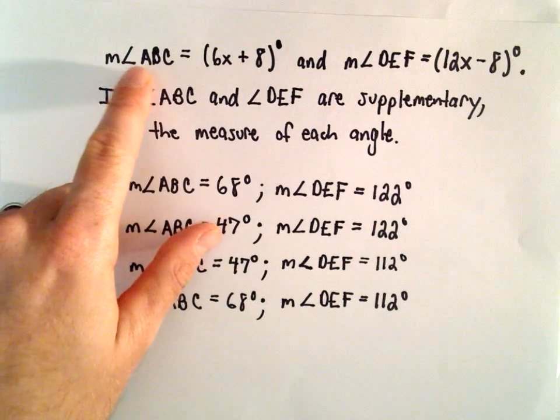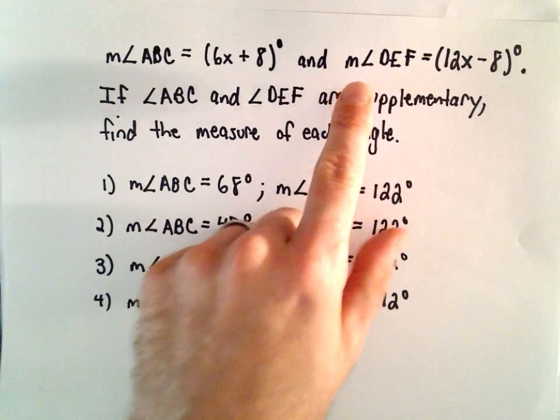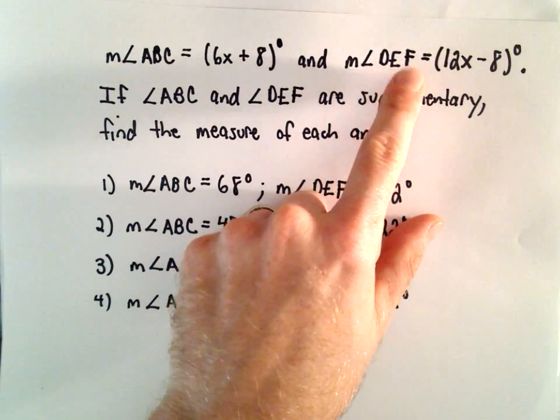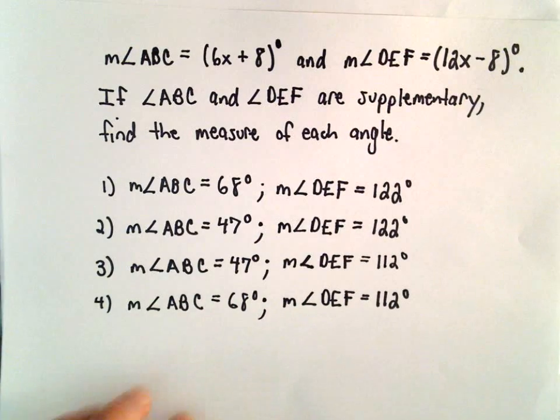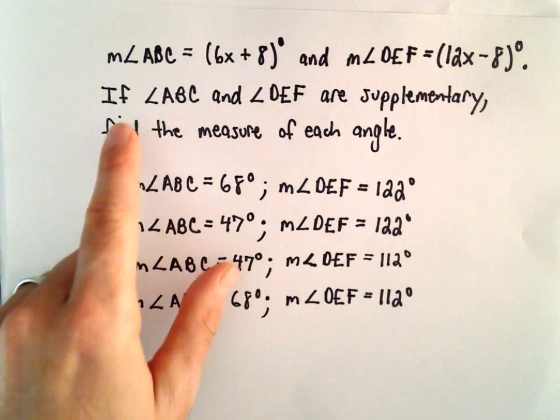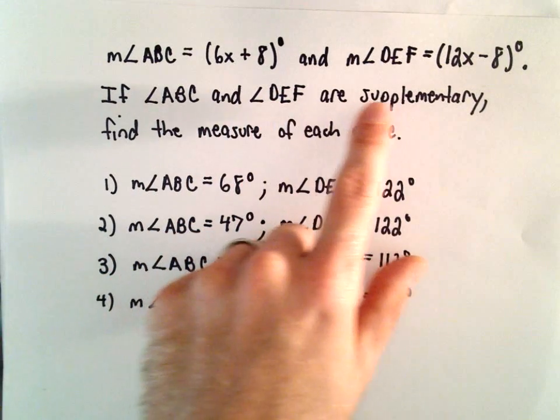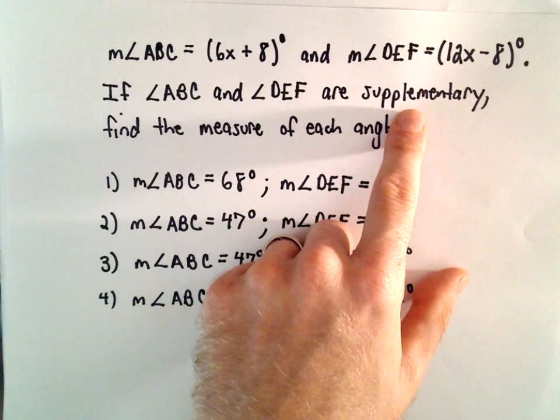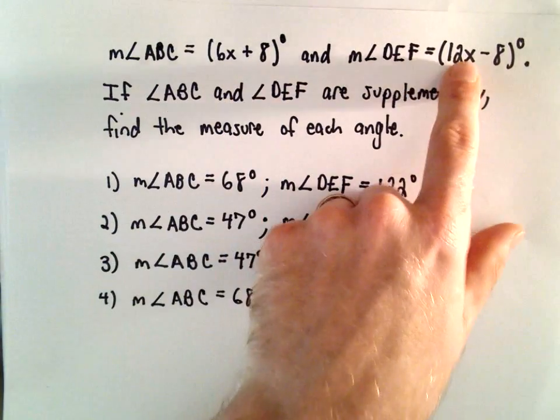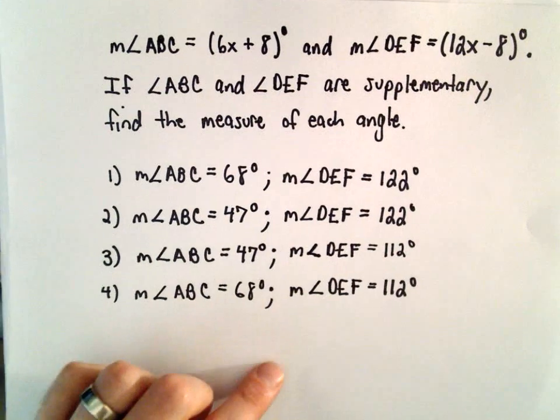The measure of angle ABC equals 6x plus 8 degrees, and the measure of angle DEF equals 12x minus 8 degrees. We're also given some additional information that angle ABC and angle DEF are supplementary. Recall, if two angles are supplementary, it means that when we add their measures together, that equals 180 degrees.